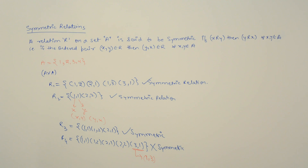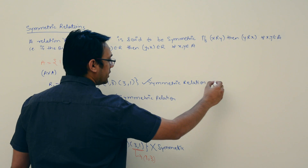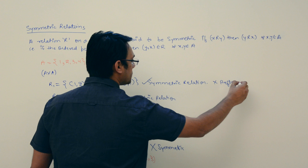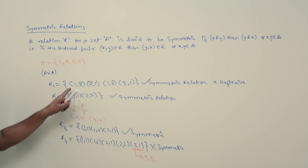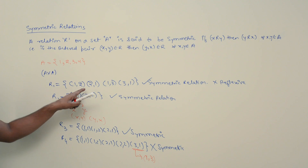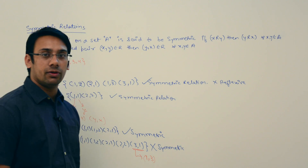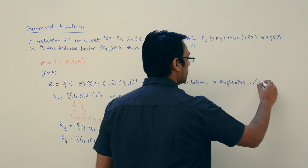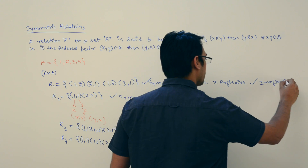Looking at all these relations, the first relation R1 is symmetric but it is not reflexive, because it does not contain the pairs (1,1), (2,2), (3,3), (4,4). But that relation is irreflexive.